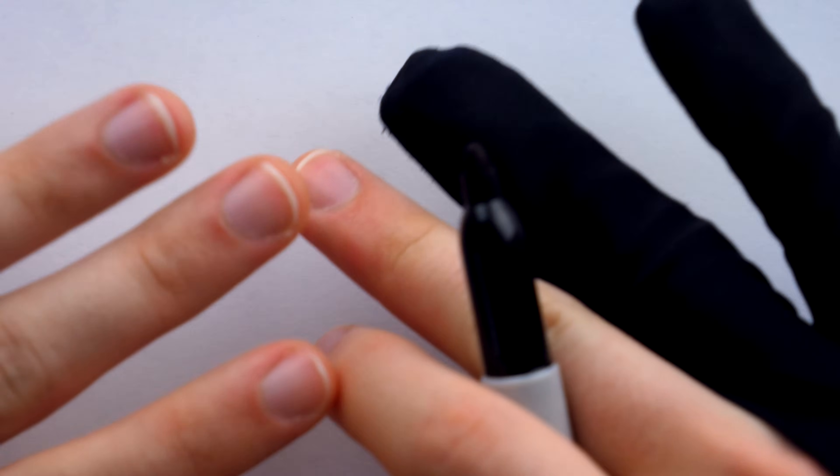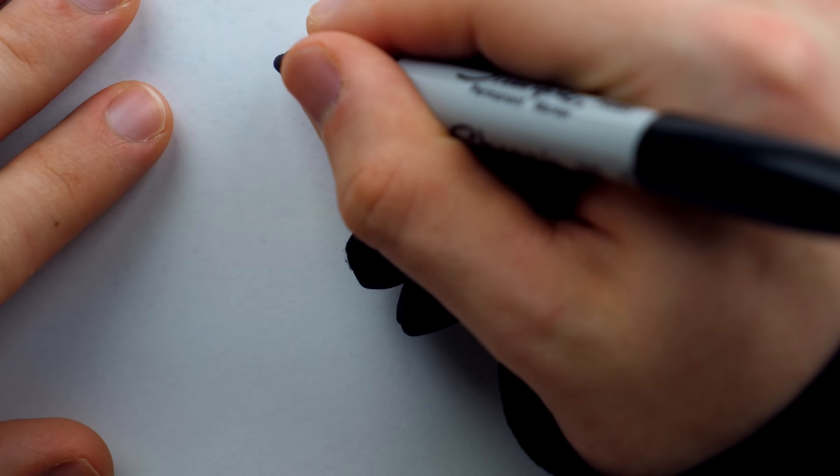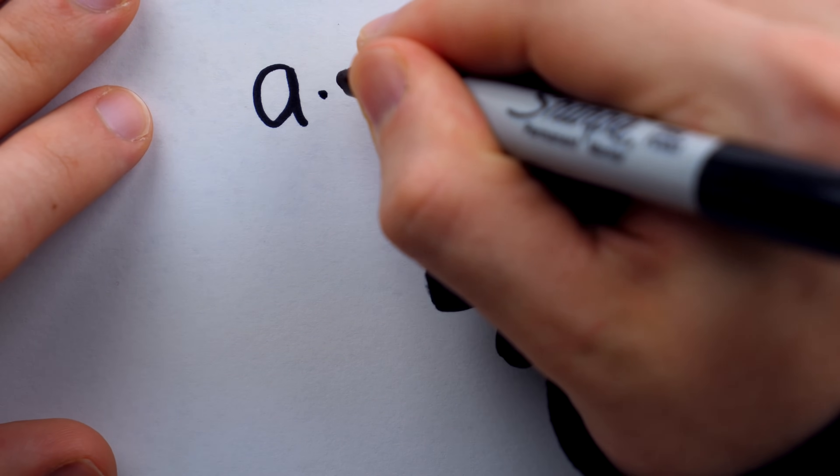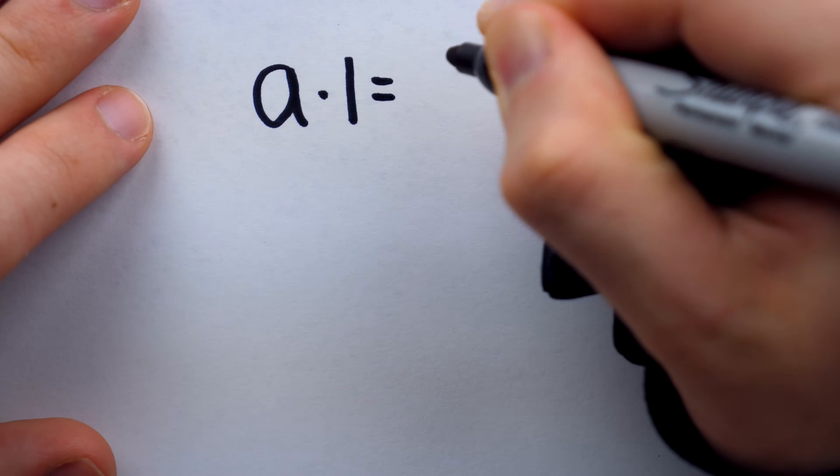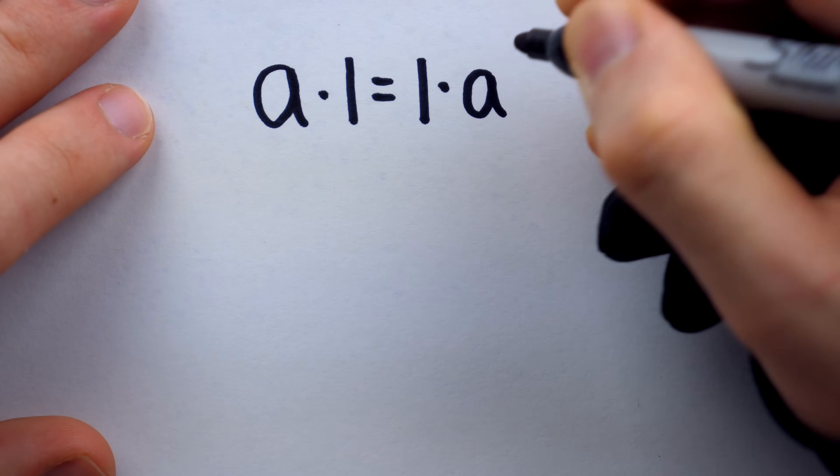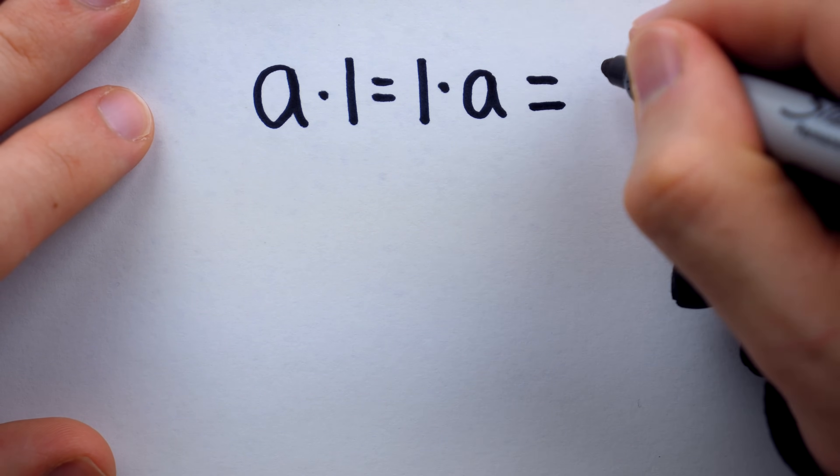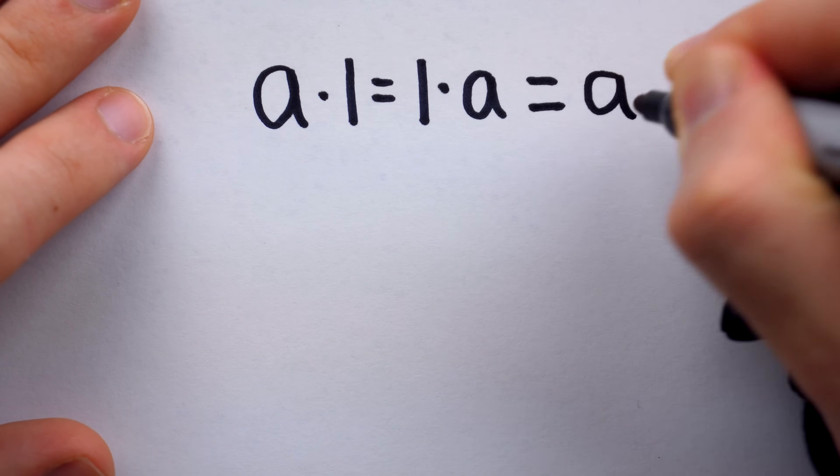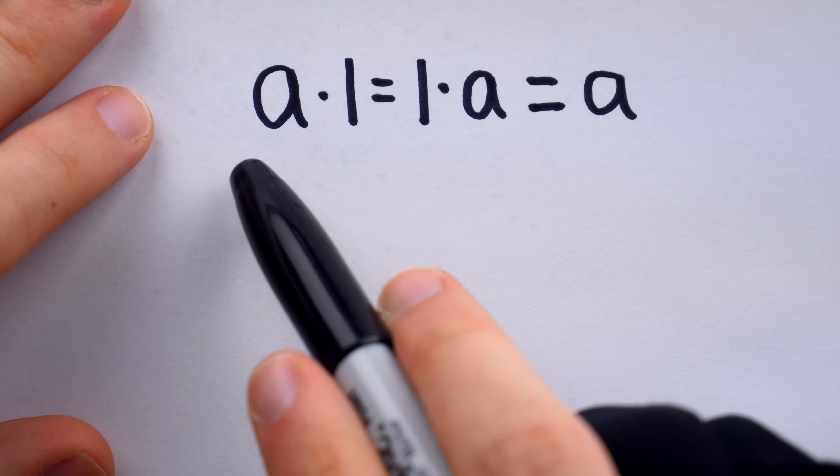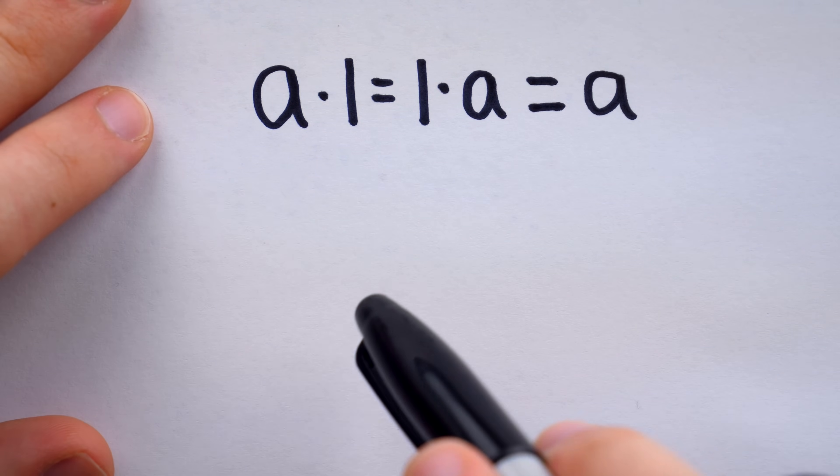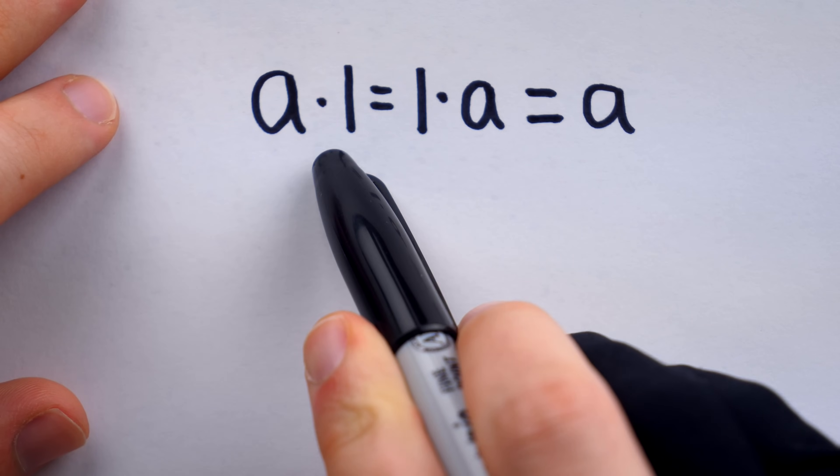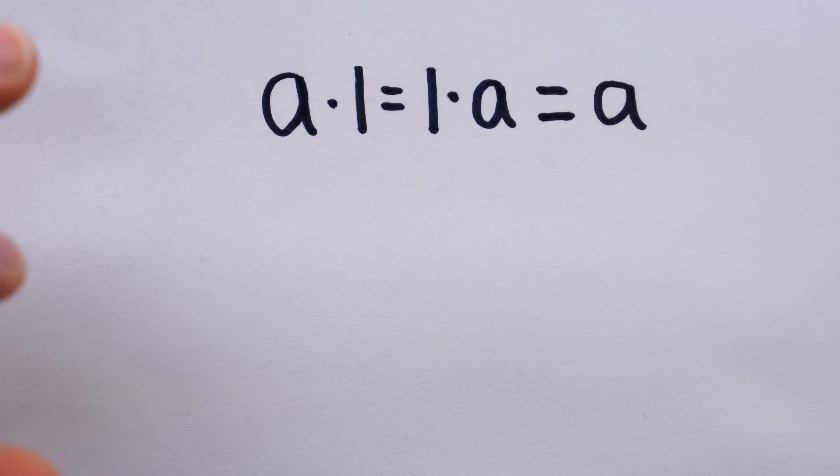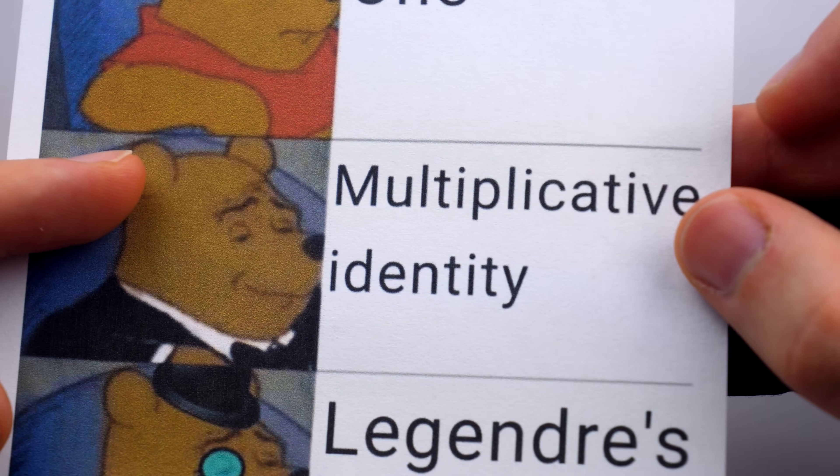What does that mean? Well, the phrase multiplicative identity describes one because we could take any number a, multiply it by one on the right or on the left, and the identity of a is unchanged. One times a, a times one, it's all the same. It's just a. This is true no matter what a is.